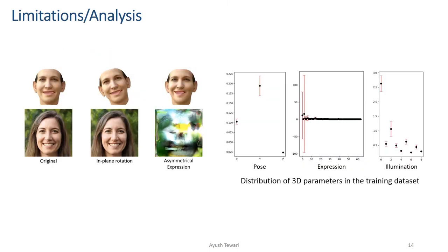Our method also has some limitations. StyleRig is not able to exploit the full expressivity of the parametric 3D face model. We provide an analysis of the biases present in StyleGAN which shows that certain 3D parameters are better represented compared to others. This could be a potential source of these limitations. Please refer to the paper for more details.